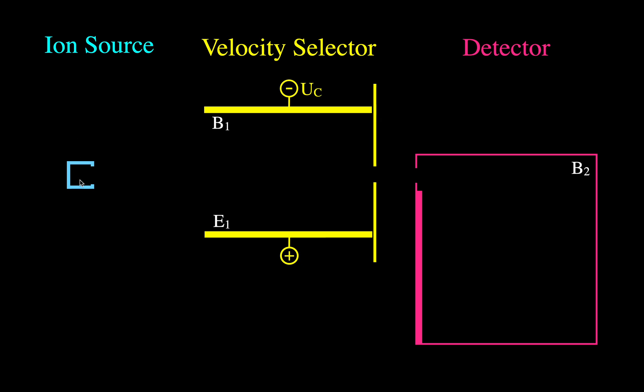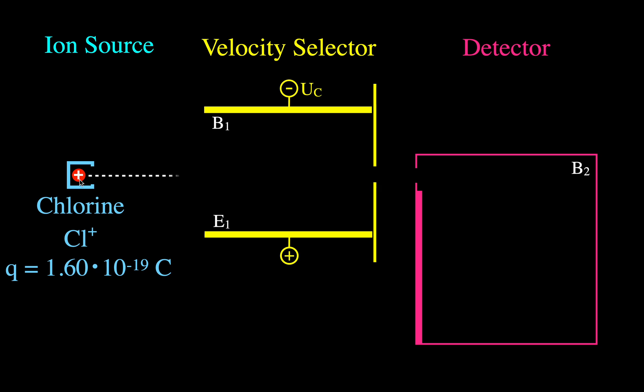Let's say we have our ion source containing chlorine gas. We are going to pass a current through it or heat it up to ionize it, driving off one electron. So we have chlorine as a positive ion, written as Cl⁺, and the charge, when we drive off one electron, is going to be 1.6×10⁻¹⁹ coulombs. When we remove one electron, the chlorine ions will have a positive 1.6×10⁻¹⁹ charge, and they pass out of our ion source, accelerated into our velocity selector.